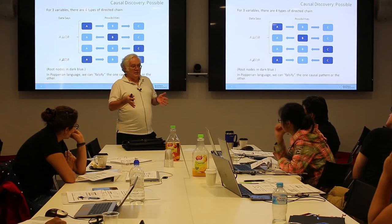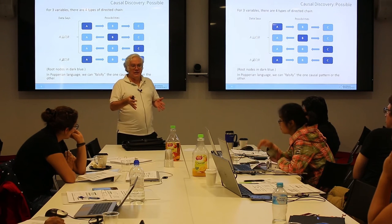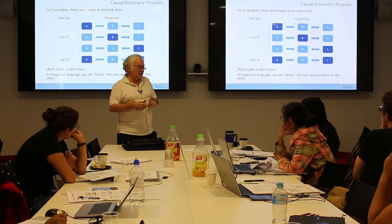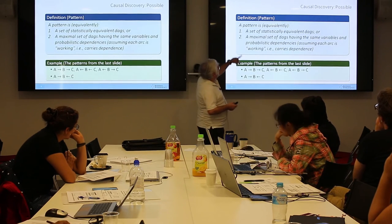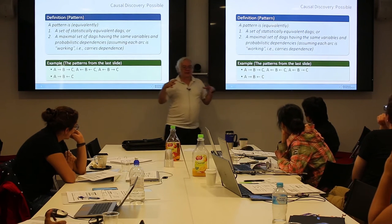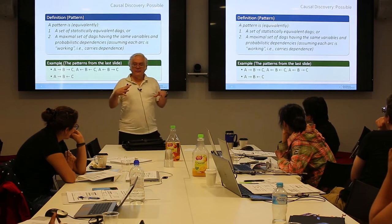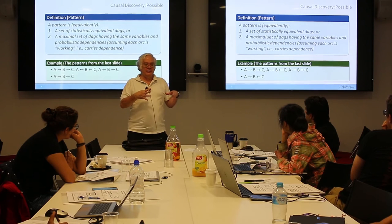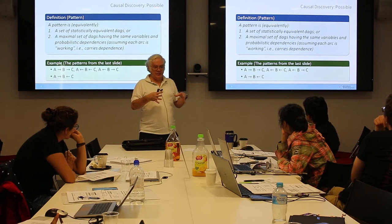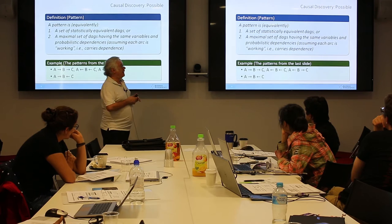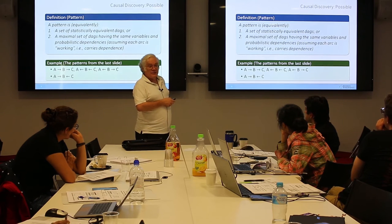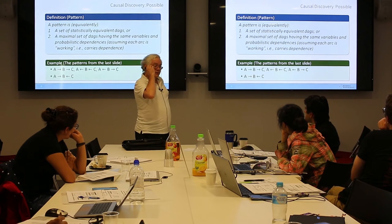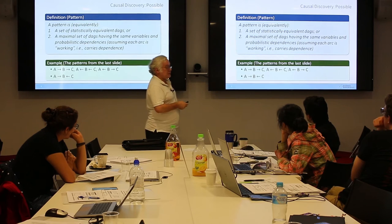So that's my pitch that causal discovery is possible. You have these dependency structures, you can learn them from the data, you can orient a bunch of arcs — maybe not everything, but a lot. You get a partial network, and if you need a fully directed acyclic graph, there are different things you can do. This is called pattern learning: a pattern is just a set of directed acyclic graphs that are statistically equivalent, meaning you can parameterize any DAG in the pattern to do exactly the same job in maximizing the likelihood for the data. That was proven in the early days of causal discovery.